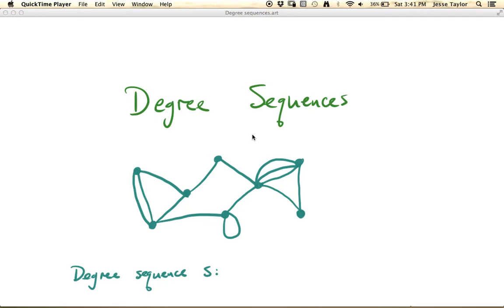In this video we're going to talk about degree sequences. So we've already talked about what degree is, so let's start out by considering this graph, this teal graph, and labeling every vertex with its degree.